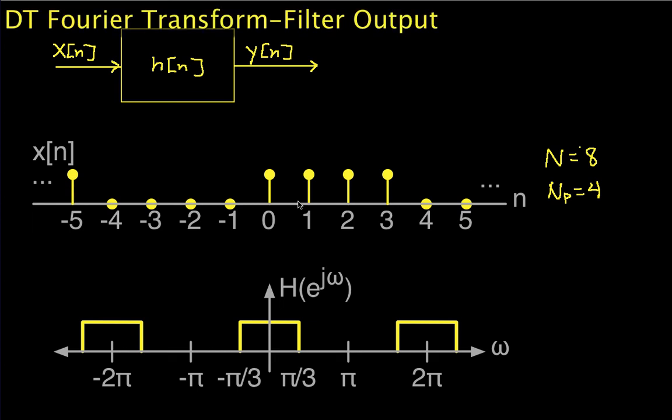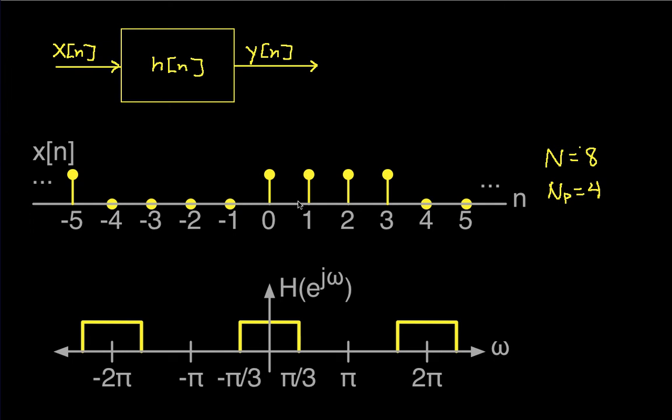Hello and welcome to this video in which we'll use the discrete-time Fourier transform to determine the output of a filter in response to its input. We'll use the frequency response of the filter and compute the Fourier transform of the input, knowing that the Fourier transform of the output equals the frequency response times the Fourier transform of the input. We'll also use the relationship between periodic signals with Fourier series coefficients and the discrete-time Fourier transform representation.